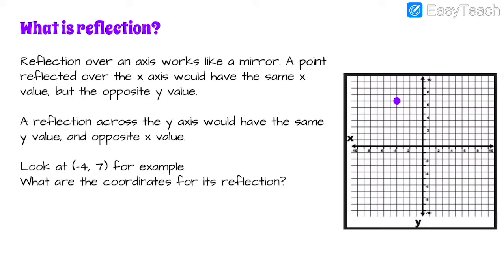So when you have a point that's being reflected over the x-axis, it would have the same x value but opposite y value. It's going to be in the same spot for its x value but the opposite y value because it's reflecting. And then it goes the opposite way for the y-axis — if it's reflecting over the y-axis it has the same y value and opposite x value. So let's take a look at negative 4, 7 for example. Here we have that plotted in purple.